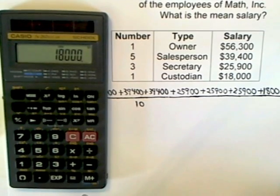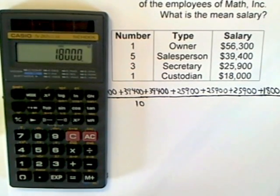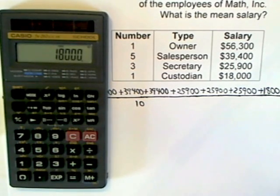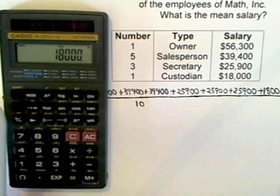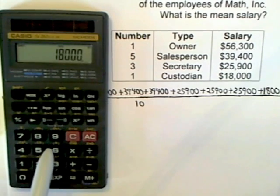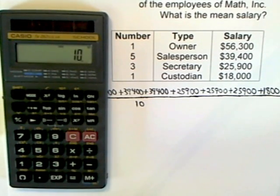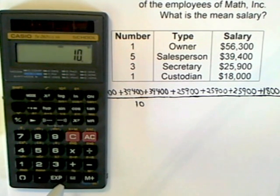Now it would certainly make me feel better if I could ensure myself that I didn't leave something out. There is a way to look and see how many numbers you have in there. The way to do that is to press Shift then the number 6, because the shift on the number 6 key is N — that means the number in the data set. And it is 10, so that makes me feel better.